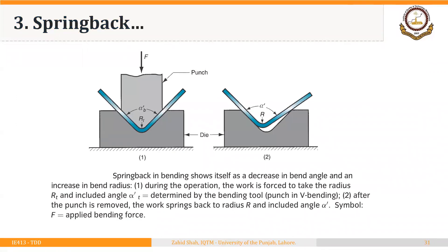This figure shows the phenomenon of springback. Springback in bending shows itself as a decrease in the bend angle — that is, a decrease in this angle — because after springback the sheet will tend to move in this direction, so this angle will reduce. There is also a decrease in bend angle or increase in included angle, as well as an increase in the bend radius.